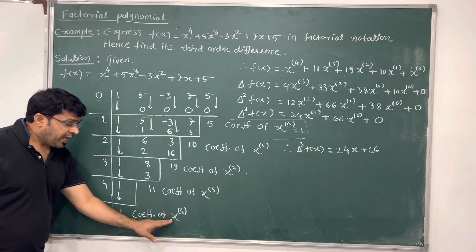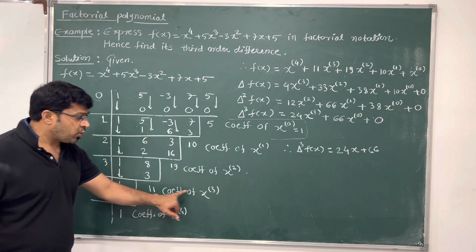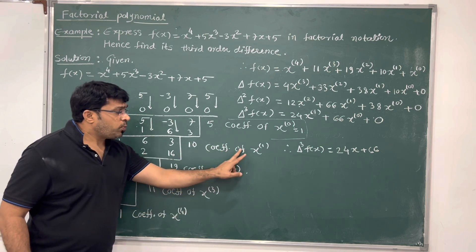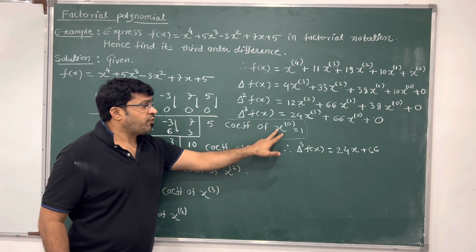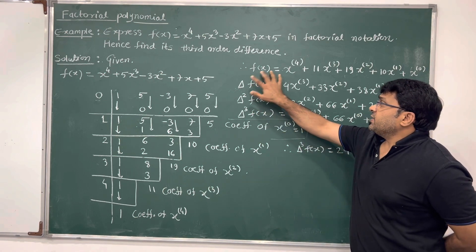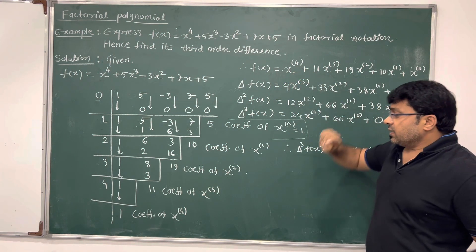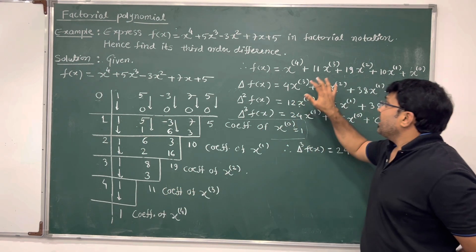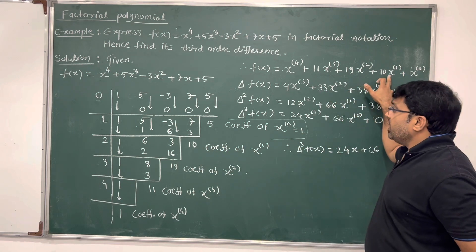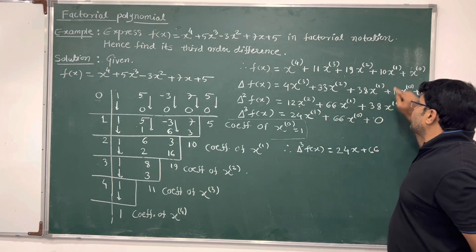The numbers obtained in the right corner represent the coefficients. The lowest 1 is the coefficient of x to the power 4 factorial. Then 11 is the coefficient of x to the power 3 factorial. Then 19 is the coefficient of x to the power 2 factorial. Then 10 is the coefficient of x to the power 1 factorial. And 5 is the coefficient of x to the power 0 factorial, which equals 1. We read these in reverse order.